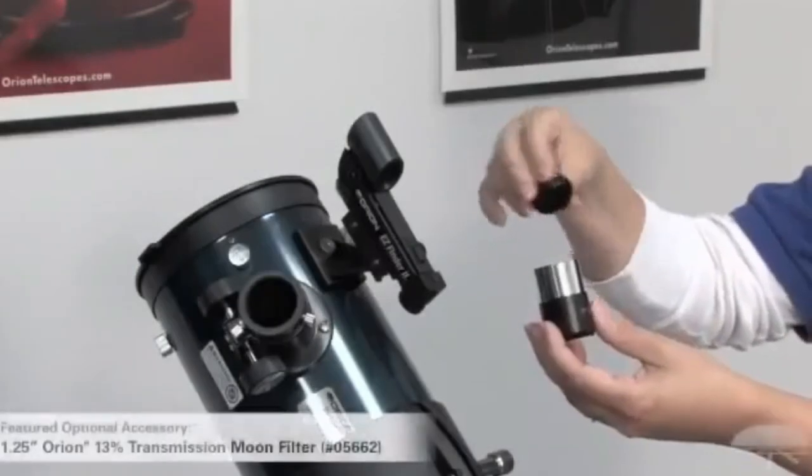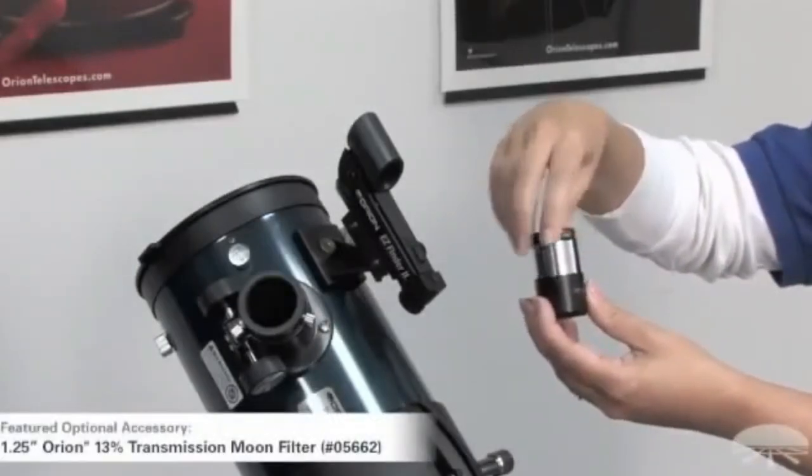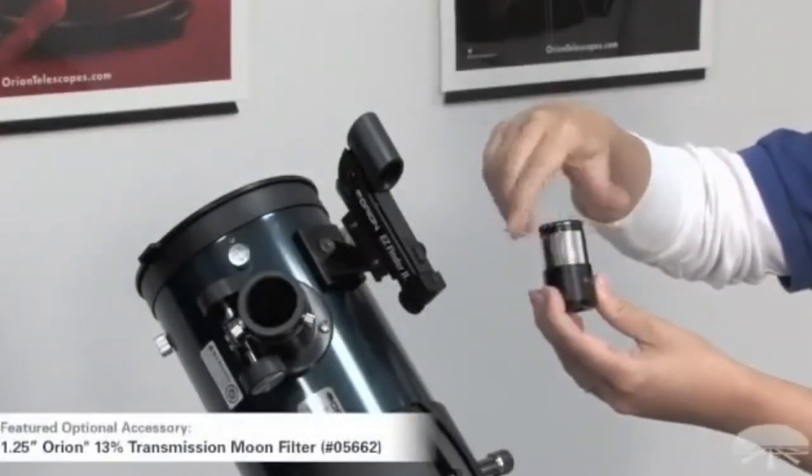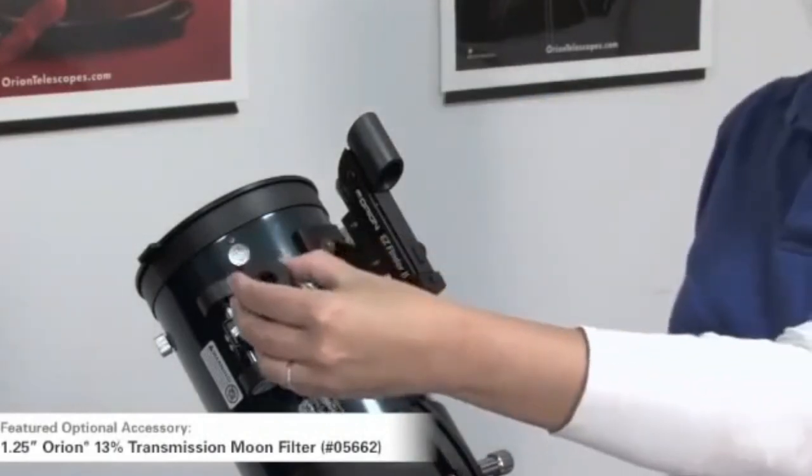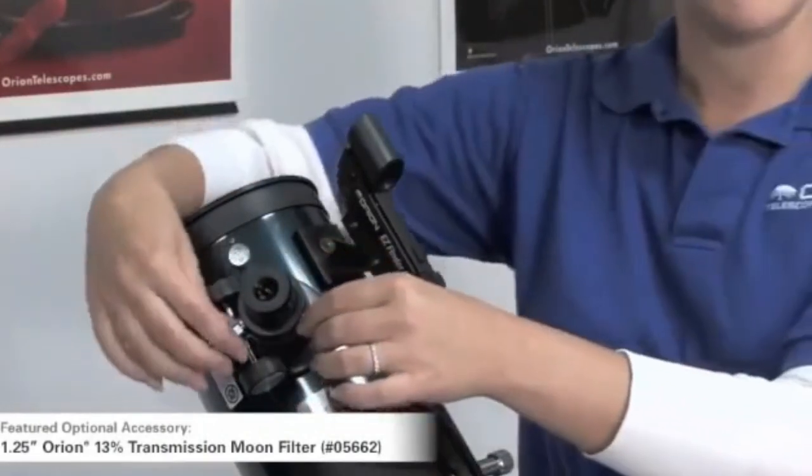To attach the Moon Filter, simply thread it into the chrome side of the eyepiece. And then slide the eyepiece into the focuser and tighten the screws.